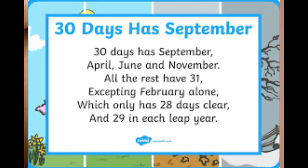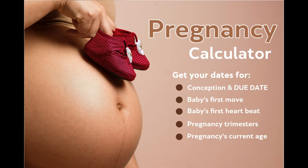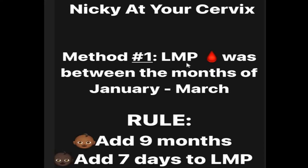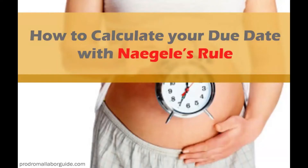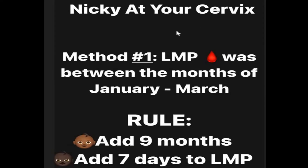It's important to know that when you see me use 'LMP,' I'm talking about your last menstrual period — specifically the first day of your last menstrual period. I use a blood icon to remind you that this is for your period. I'm going to tell you three methods today.